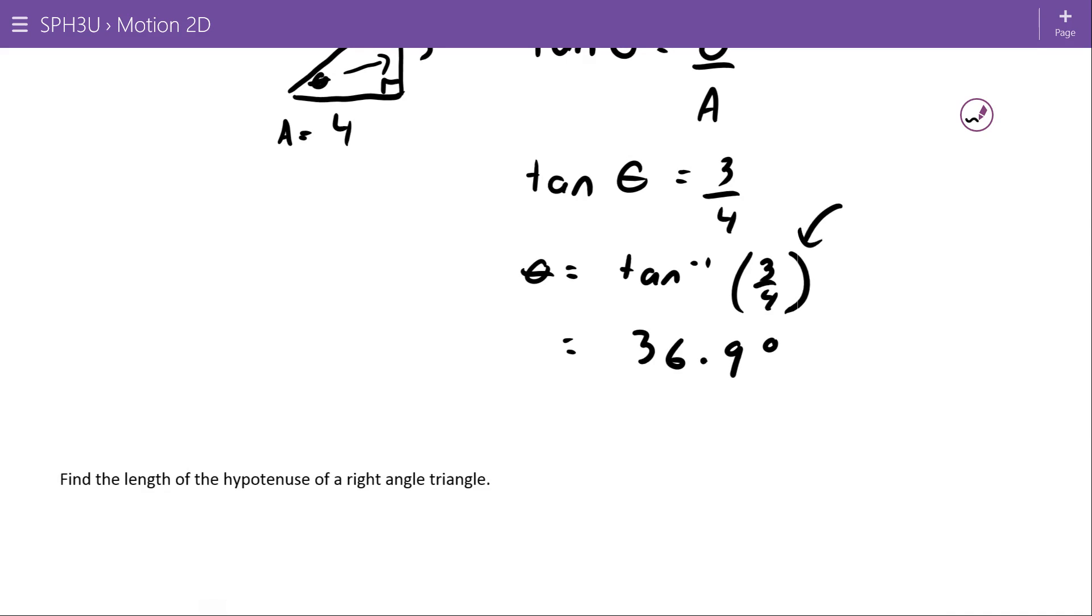36.9 degrees. Also note that that 3 over 4 is in brackets. So depending on your calculator, you might want to hit tan bracket 3 divided by 4 instead of just tan 3 and then divided by 4. You want to make sure that the division happens before the inverse tan function. So that's 36.9 degrees.